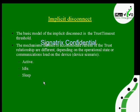So far we have seen the first method, what is called explicit disconnect. Now, implicit disconnect — the basic model of implicit disconnect is the trust timeout threshold. It keeps a timer, and if during that timer it is not receiving any signal from that particular device, the device will get disconnected automatically. The mechanism defined to accommodate refresh of the trust relationship differs depending on the operational state. Three operation states are: active, idle, and sleep.